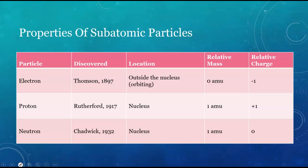Protons were the next particle discovered. They're found in the center of the atom, in the nucleus, and have a mass of approximately 1 AMU. They also have a positive charge. Neutrons were the last discovered particles. They are roughly the same size as protons, and they have zero charge.